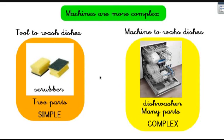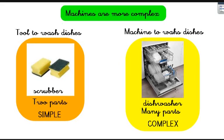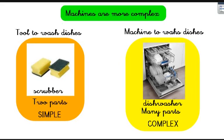Here's another example showing how tools are simple and machines are more complex. We have a scrubber, which is used to wash dishes. You wash the plates with the scrubber — this is using a tool. Look at the parts: very simple, just two parts — the strong rough part and the soft sponge part. Now look at another way to wash dishes: the dishwasher. It's a machine, it uses electricity, it can hold lots of plates and cutlery, but look at all its many parts — it has an engine and is very complex. So: simple vs. complex, tool vs. machine.